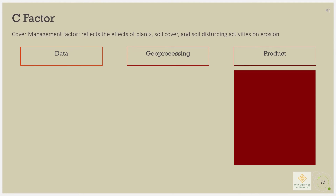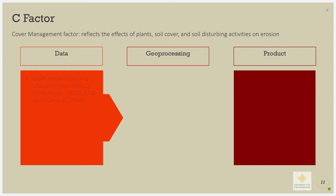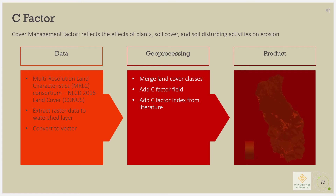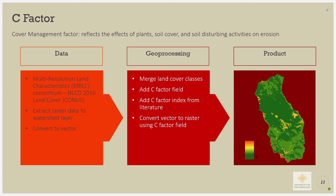The C factor, or cover management factor, reflects the effects that vegetation cover and soil-disturbing activities have on erosion rates. The National Land Cover Data was used to find the C factor. The extract by mask tool was used to mask the Redwood Creek watershed layer with the land cover data. The raster file was then converted to a polygon, and similar land use/land cover classes were merged together. A field was added to include the C factor index for each land use/land cover class, and once added, the polygon was converted back to a raster file.